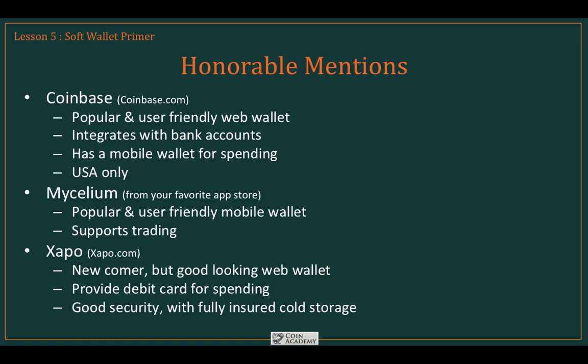So there you have it — a complete list of 14 wallets, a shortlist of seven, and three honorable mentions: ten options in total, and we're bound to have covered something that will work for you. Get out and try them — most can be downloaded at no additional cost, though you may need to register. Blockchain.info provides a demo site so you can try it without giving up any information at all. Find something you're comfortable with, because you want it to be something you actually use.